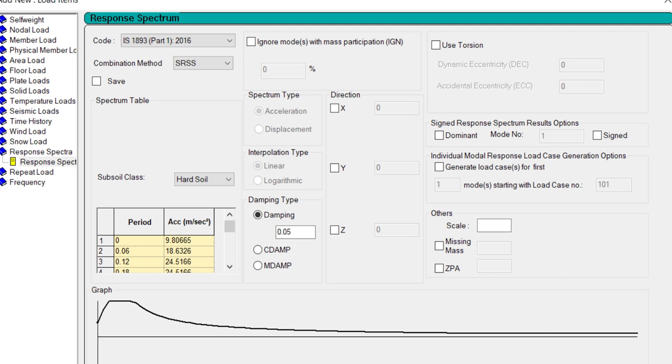However, if you are selecting the code as IS 1893 instead of the custom input, then you need not define the acceleration due to gravity factor or the g factor in the scale factor box. This is because you have selected the code and the program understands that this value is already normalized, as the code expresses this as Sa/g. The program internally multiplies the internal value of g, so there is no need to scale up or scale down this value. Just keep it as a value of one.